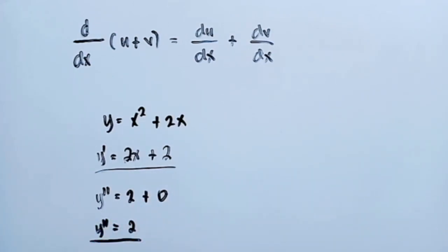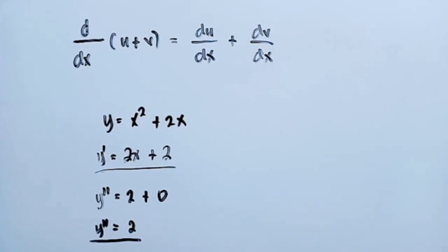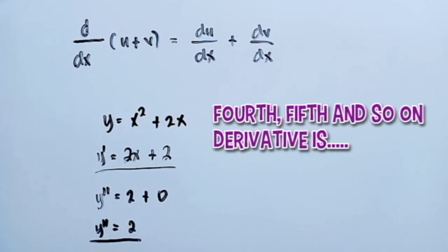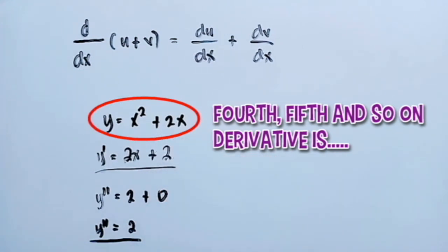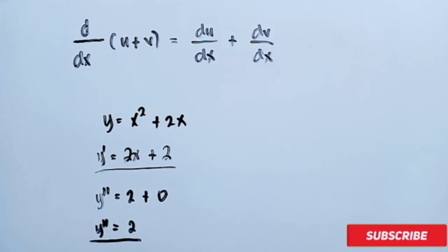If we're going to get the third derivative of the function y equal to x squared plus 2x, what is the derivative of 2? The derivative of 2 is 0. And if we're going to get the fourth, fifth, and so on of the derivative of the function y equal to x squared plus 2x, it is still 0. Okay, let's proceed to the second example.